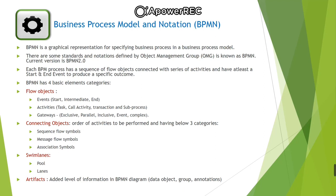Each BPMN process has a sequence of flow objects connected with a series of activities and has at least one start and end event to produce a specific outcome. BPMN has four basic element categories which are flow objects, connecting objects, swim lanes and artifacts.